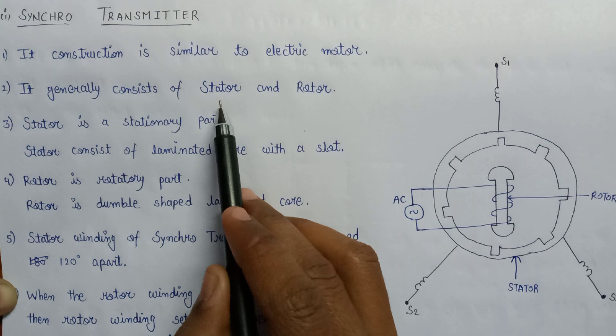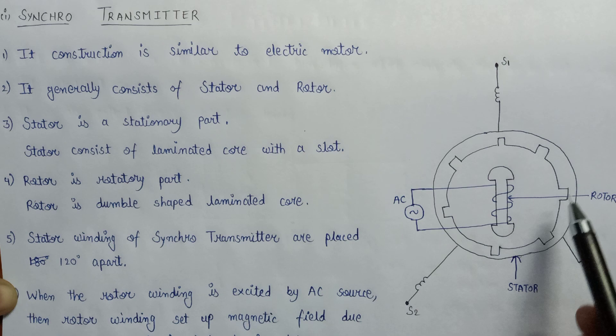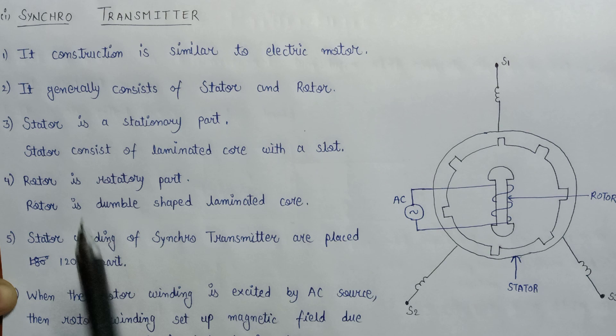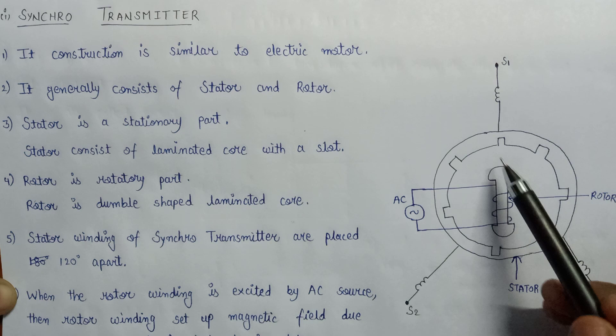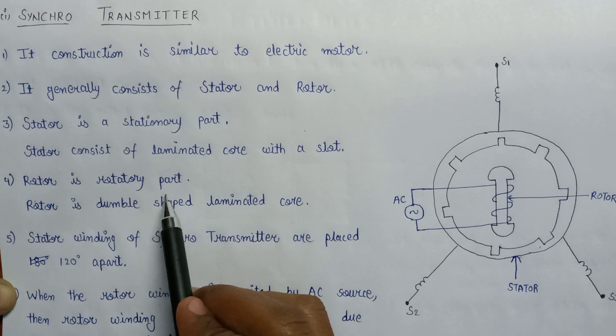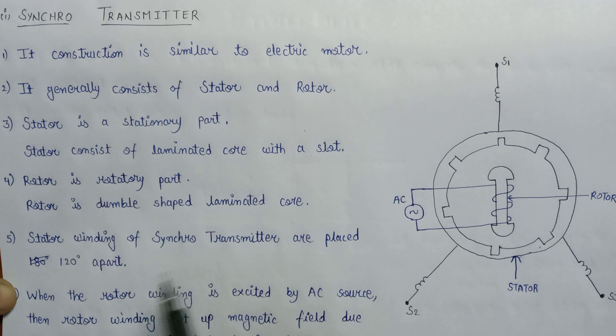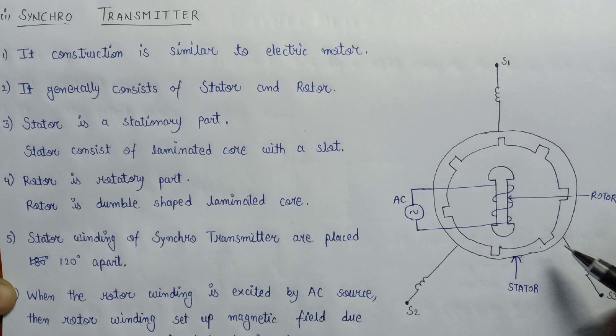The synchro transmitter generally consists of two parts: the stator and the rotor. The stator is the stationary part — this whole part will not rotate. The stator consists of a laminated core with slots. The rotor is the rotatory part; this shaft rotates within the stator winding. The rotor is a dumbbell-shaped laminated core, and both the stator and rotor are laminated.